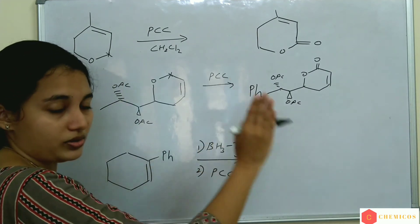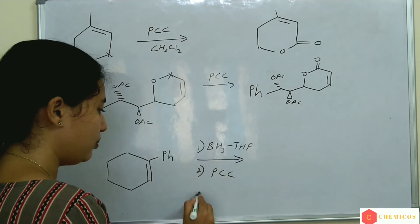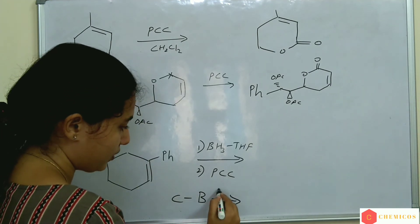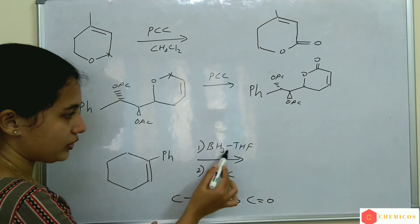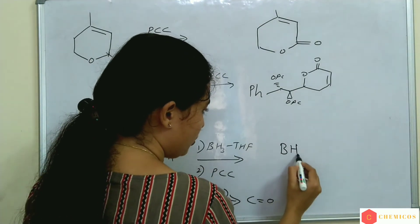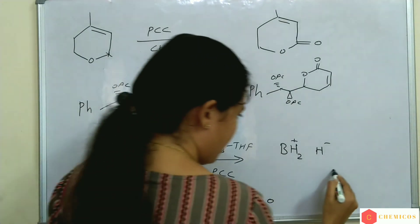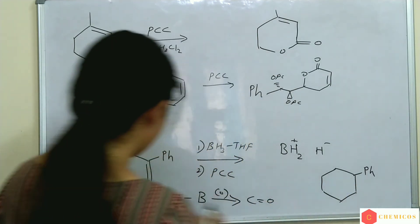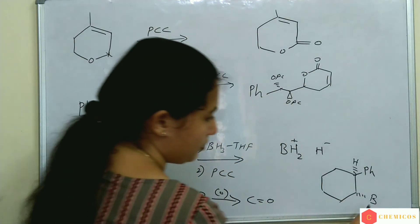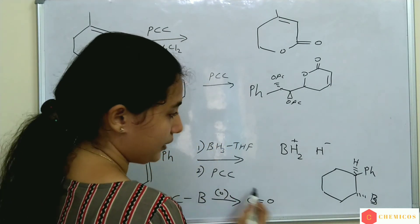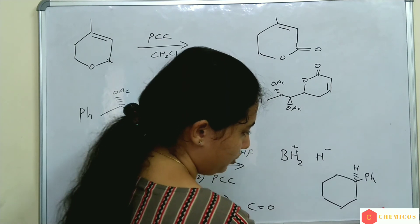Another type of reaction: here the carbon-boron bond is oxidized to a ketone. BH₃/THF gives BH₂⁺ and H⁻, and using anti-Markovnikov addition, H and B are added. Now when PCC is added, this carbon-boron bond is oxidized to a ketone.